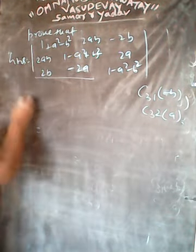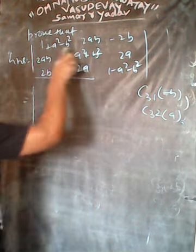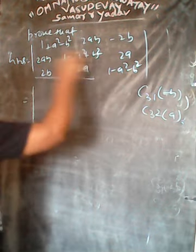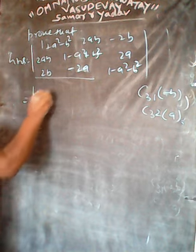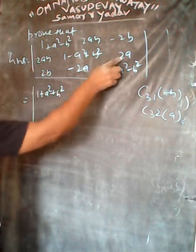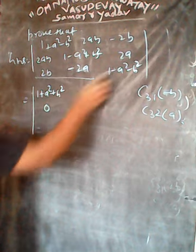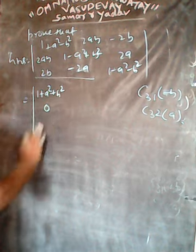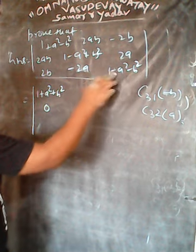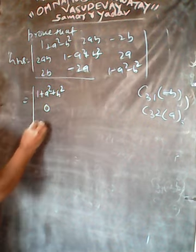So multiplying by minus b gives minus 2b squared, then minus b plus 2b square — that will be added. So we get 1 plus a square plus b square. Now 2ab will be cancelled. Then again for the next entry, we get minus b plus a square plus b square, so that will be cancelled. Finally, b is common, so we get 1 plus a square plus b square.